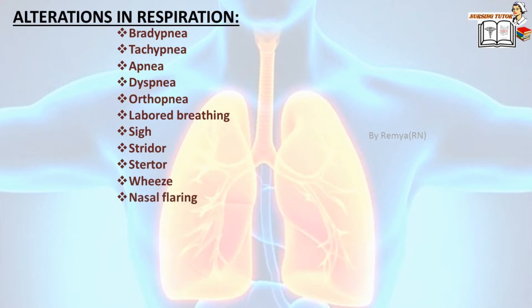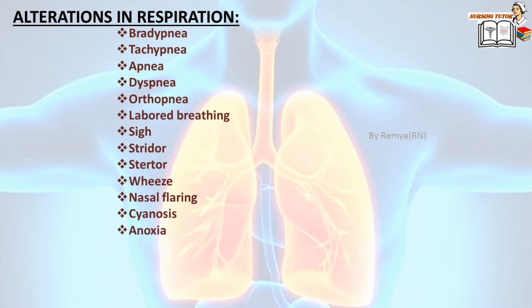Nasal flaring — difficulty in breathing characterized by dilation of the nostrils during breathing. Cyanosis — bluish discoloration of skin due to lack of oxygen in tissues. Anoxia — no oxygen in tissues. Hypoxia — lack of oxygen in tissues. Asphyxia — state of suffocation.